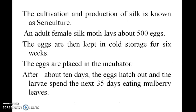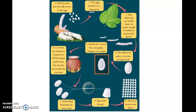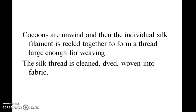The cultivation and protection of silk is known as sericulture. An adult female silk worm lays about 500 eggs. The eggs are kept in cold storage for six weeks, then placed in an incubator. After about ten days the eggs hatch and the larvae spend the next 35 days eating mulberry leaves, forming cocoons — this is the butterfly transformation cycle.